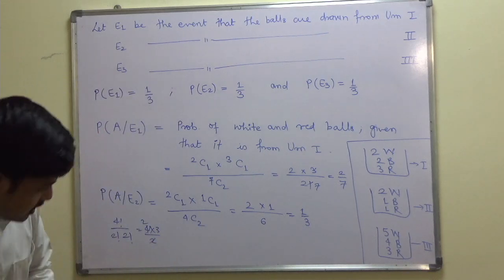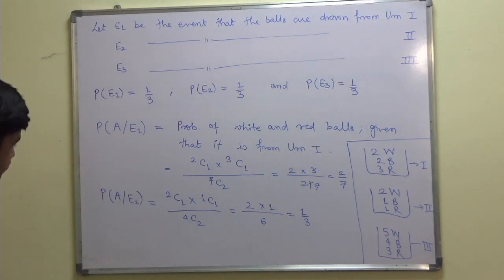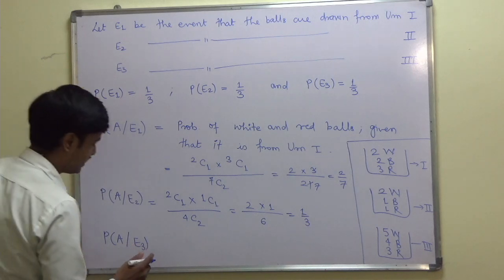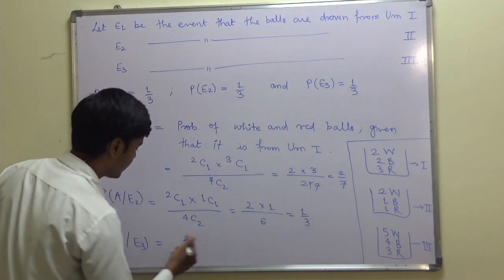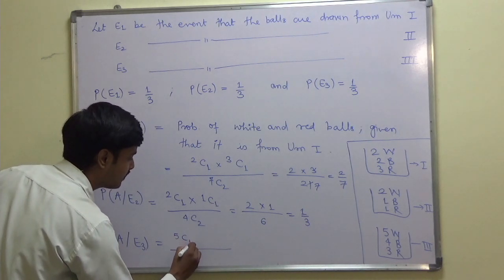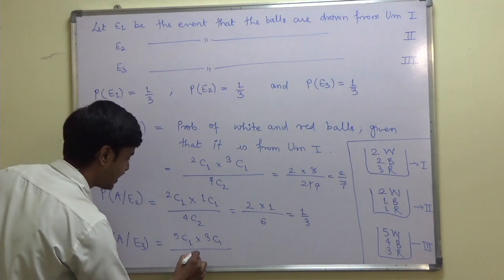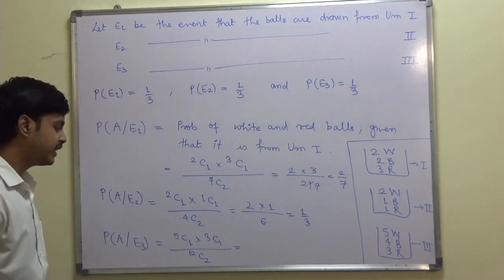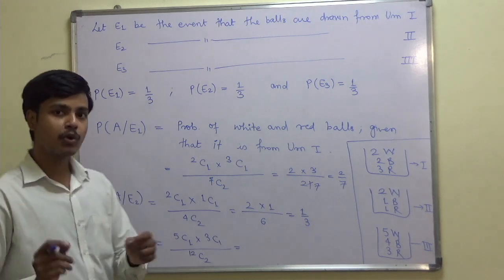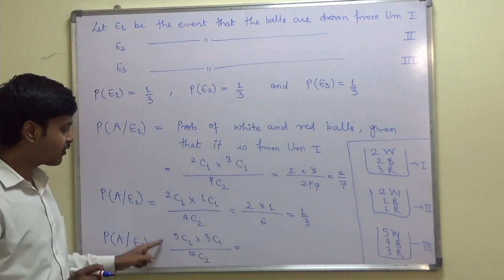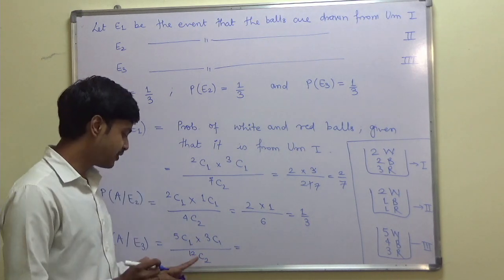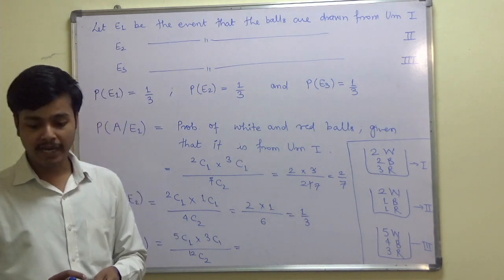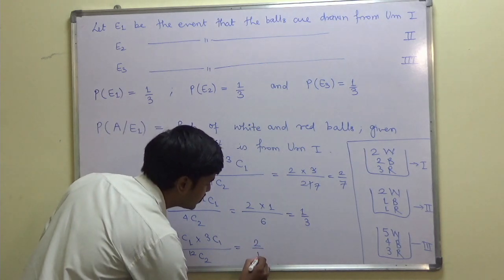Similarly, for probability of A given E3: from urn 3, white balls can be selected in 5C1 ways and red in 3C1 ways. There are 12 total balls, so 2 balls can be chosen in 12C2 ways. Please pause the video and try to find this value using combination. The answer comes out to be 2/11.